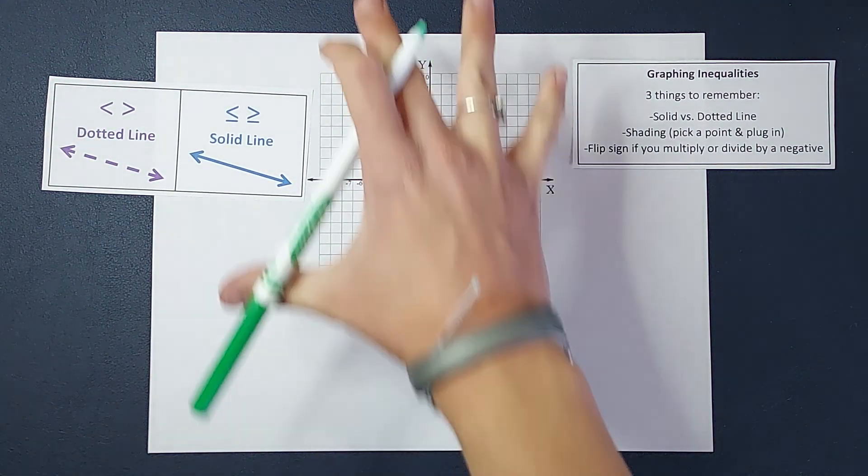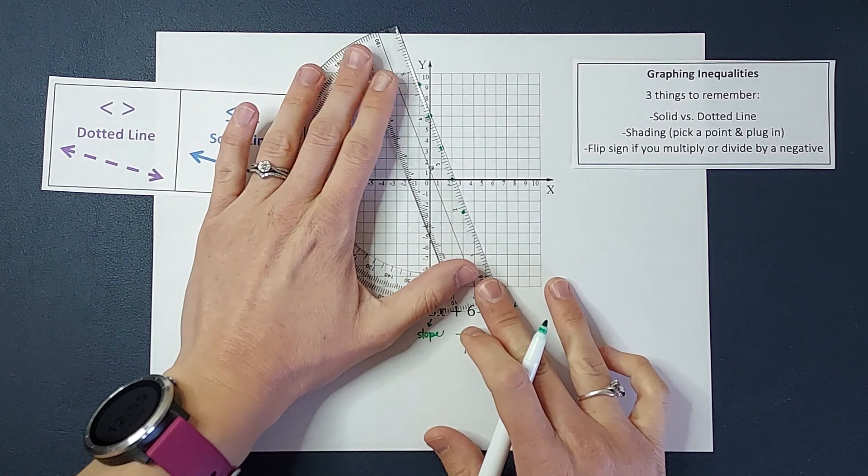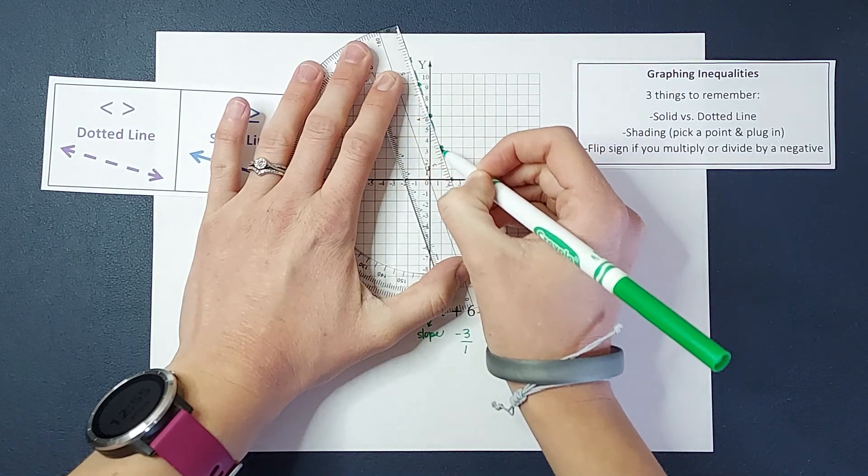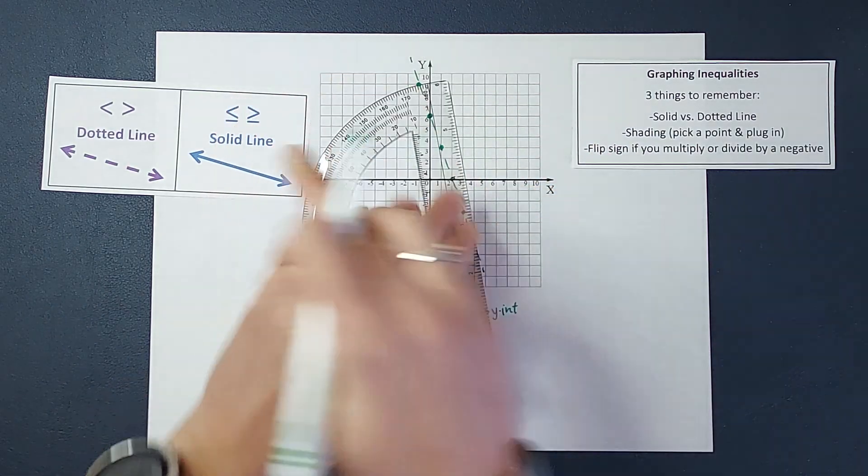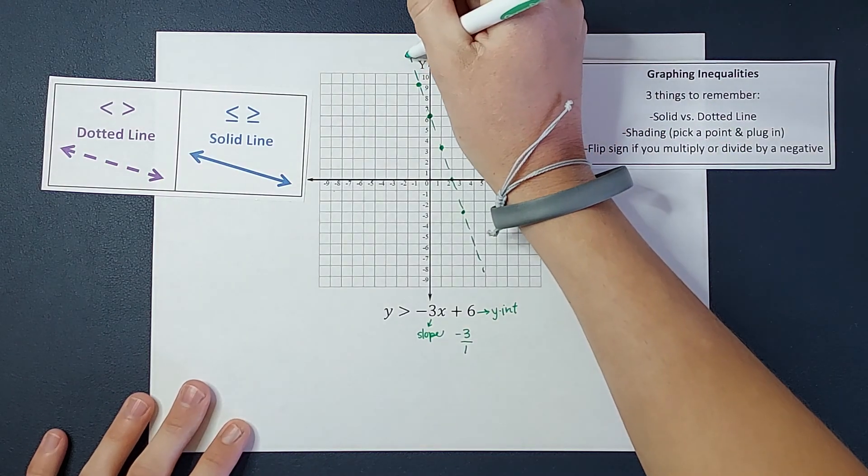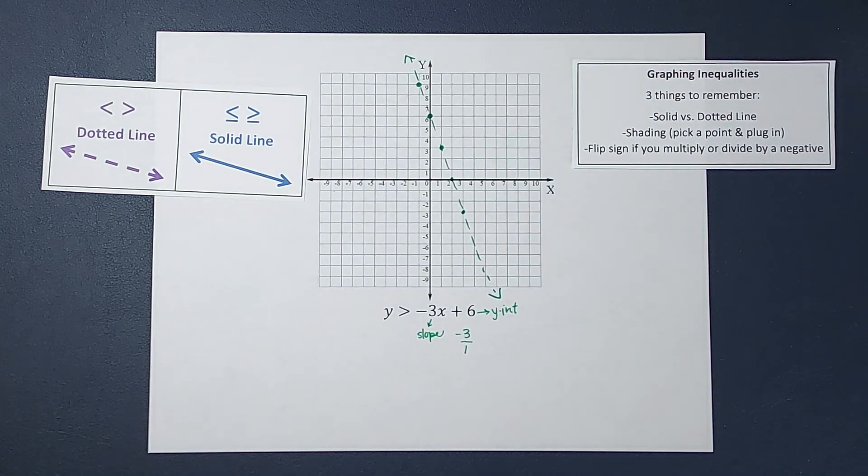If we're less than or equal to or greater than or equal to, it's going to be a solid line. When it's a problem like this where it's just y is greater than, this line acts like a boundary, but my answers don't actually lie along this line. The other situation where you have an equal to, it's a solid line because the answers can lie along that line. So there is my dotted line.